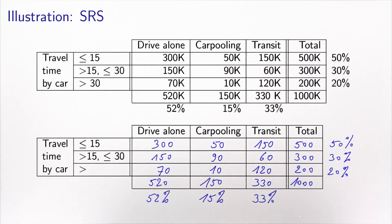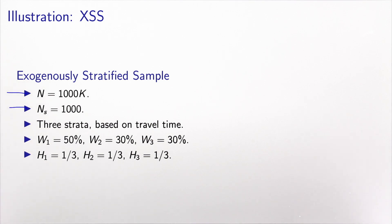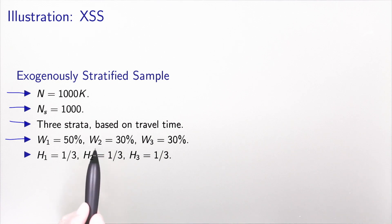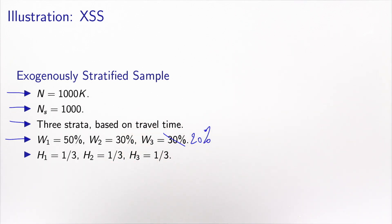As we discussed, this is mathematically convenient but not feasible in practice. Let's now illustrate the exogenous sampling strategy. Again, we have a population of one million individuals and we would like a sample of 1,000. Here we define three strata based on travel time. In this context, we know the W's — they are given by the shares in the population: 50% of people with short travel time, 30% with medium travel time, and 20% with long travel time.